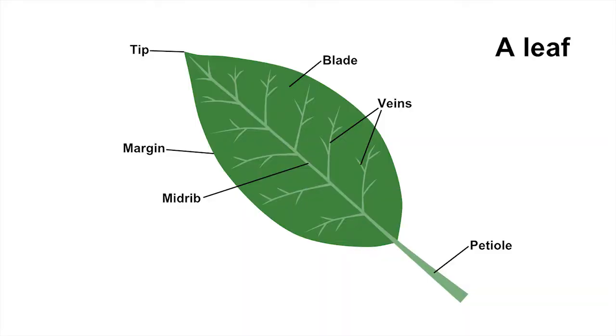If you look at a typical leaf you can identify the leaf stem or petiole, the midrib and veins that give structural support to the leaf and contain the plumbing that transports materials into and out of the leaf, and most importantly the thin broad green blade with the tip at the end and the margin around the edges.